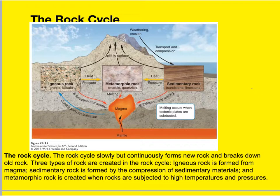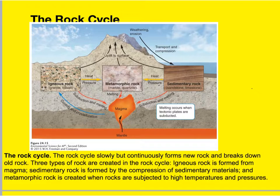Rock is the substrate of the lithosphere. It's composed of one or more minerals, and minerals are solid chemical substances with uniform and often crystalline structures that form under specific temperatures and pressure. They usually form compounds, but they may also be composed of a single element — like silver and gold come to mind.